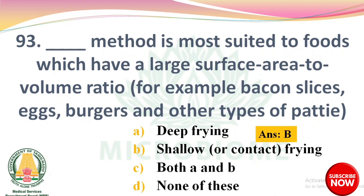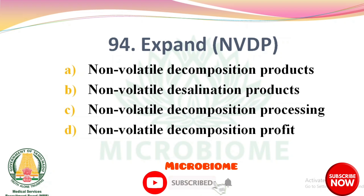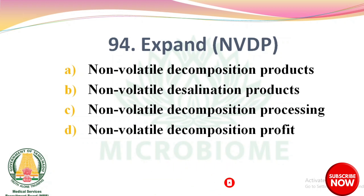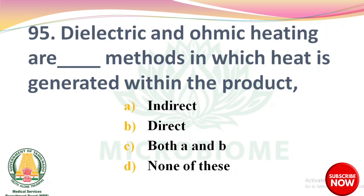Next question: expand NVDP. Options: non-volatile decomposition products, non-volatile desalination products, non-volatile decomposition processing, non-volatile decomposition profit. The right answer is Option A: non-volatile decomposition products. Next question: dielectric and ohmic heating are dash methods in which heat is generated within the product. Options: indirect, direct, both A and B, none of these. The right answer is Option B: direct.